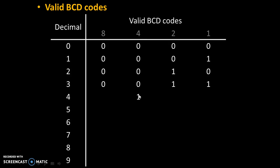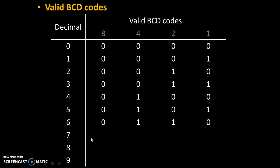For 4, only this digit is needed, that's why that digit is 1, remaining digits are 0. For 5, 4 plus 1 is 5, therefore these 2 digits are 1, remaining 2 digits are 0. For 6, 4 plus 2 is 6, therefore these 2 digits are 1, remaining digits are 0. For 7, 4 plus 2 is 6 and 6 plus 1 is 7, that's why these 3 digits are 1, remaining digit is 0.